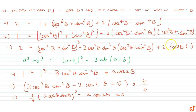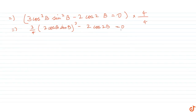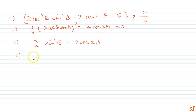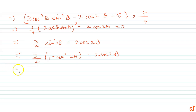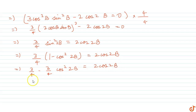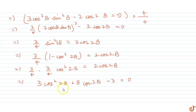Now sin²(2b) = 1 − cos²(2b), so (3/4)·(1 − cos²(2b)) = 2·cos(2b), giving 3/4 − (3/4)·cos²(2b) = 2·cos(2b). Simplifying, we get 3·cos²(2b) + 8·cos(2b) − 3 = 0.